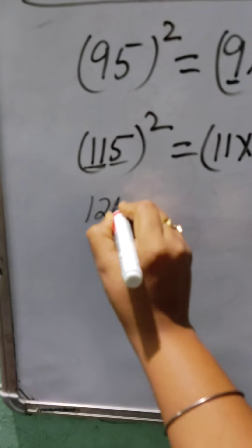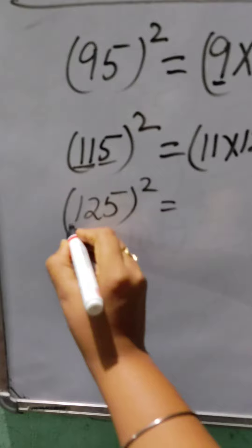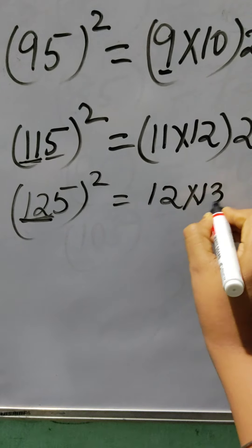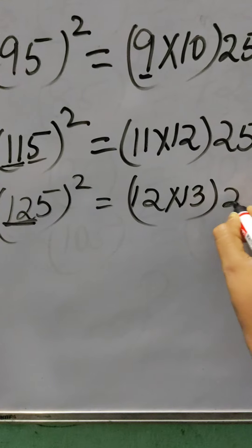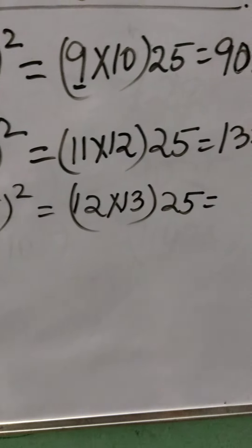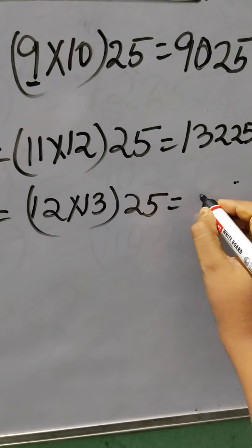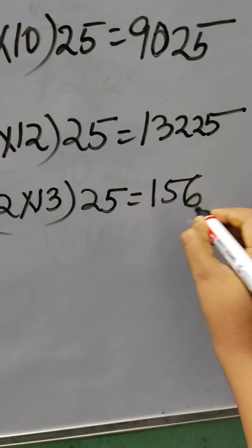Let's do this for 125 squared. Hide 5, so you can get the number as 12. Now write down 12, and after 12, 13 will come. Then write 25 nearby it. So here the answer is 15625. It means 15,625.